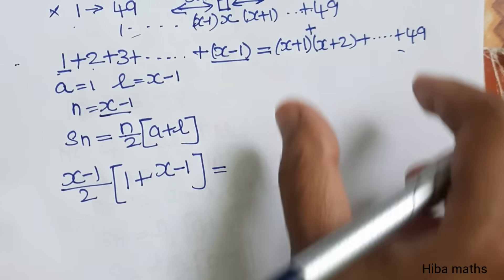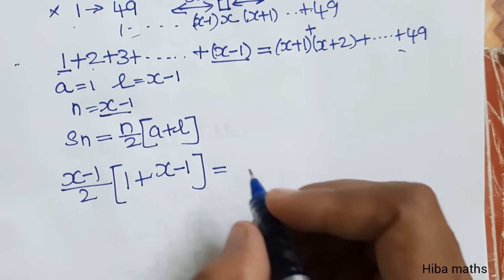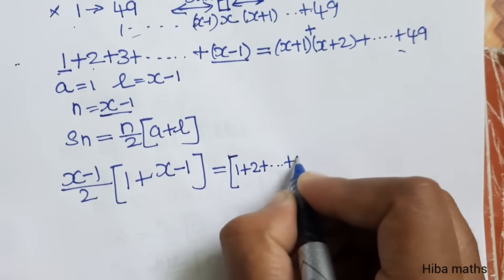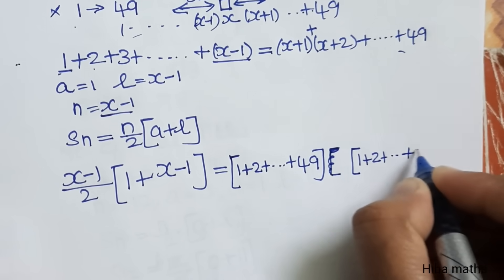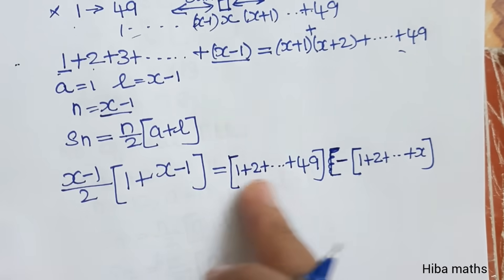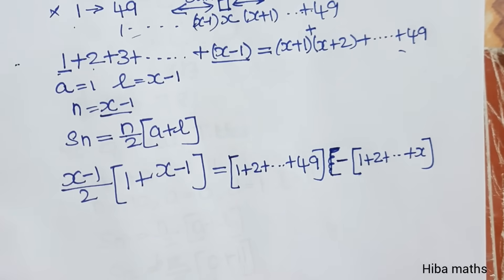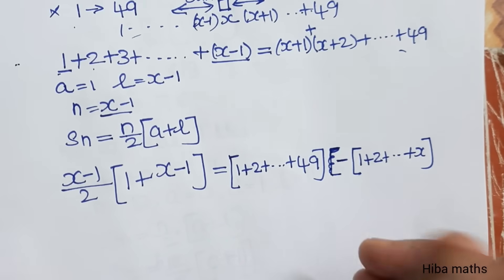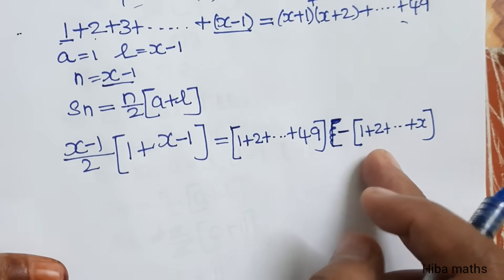Now for the houses following Sendhil's house, we have x plus 1, x plus 2, up to 49. The total sum from 1 to 49 minus the sum from 1 to x gives us the right-hand side. We balance the two expressions using S of n on both sides.